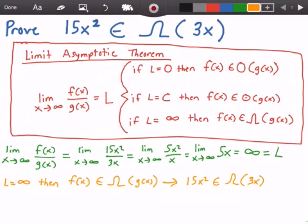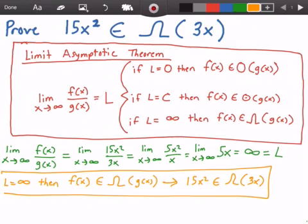Alright, and that is our answer. We have just proven, using the limit asymptotic theorem, that 15x squared belongs to big omega of 3x.